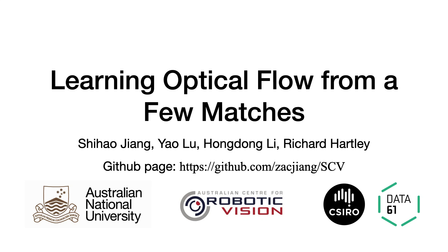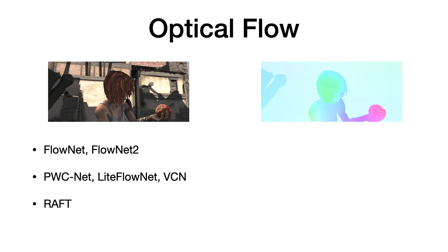We present learning optical flow from a few matches. Optical flow is a classic computer vision problem that has been researched for the past 40 years. Given two input images, we aim to find per-pixel motion vectors.